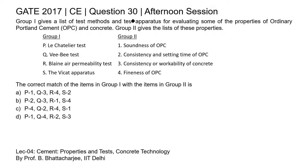This is question 30 of the civil engineering paper of GATE 2017 afternoon session. Group 1 gives a list of test methods and test apparatus for evaluating some of the properties of ordinary Portland cement and concrete. Group 2 gives the list of these properties. We need to do the correct match.